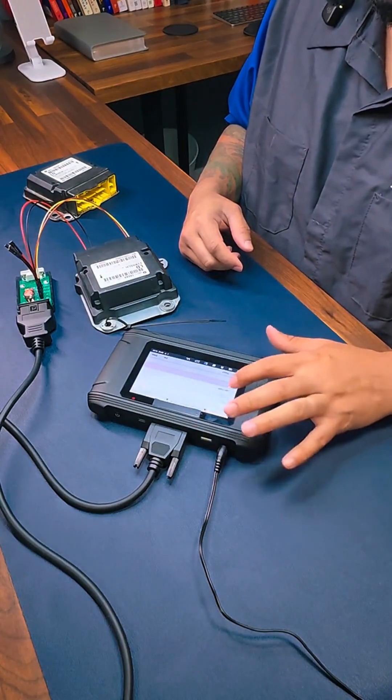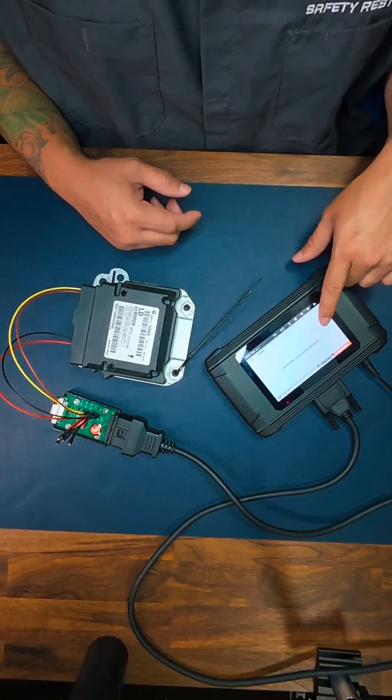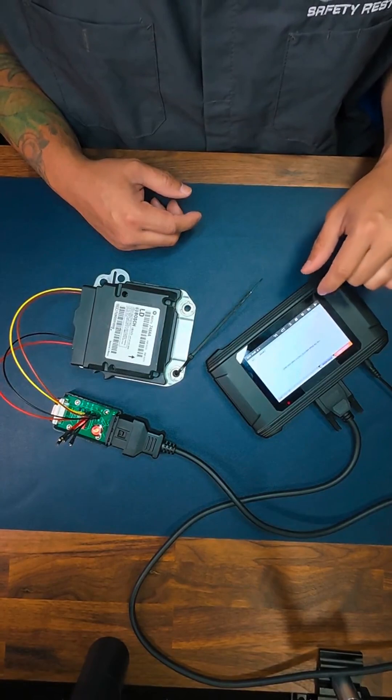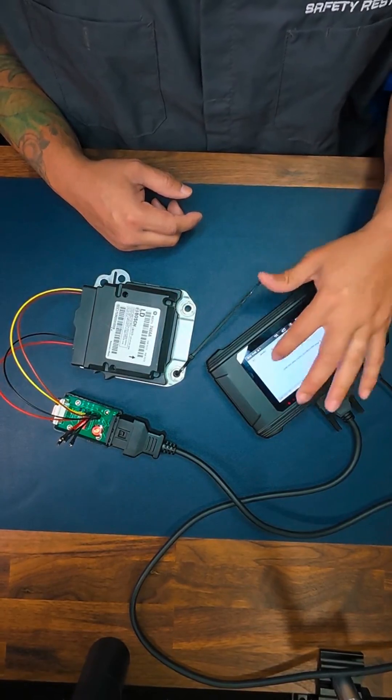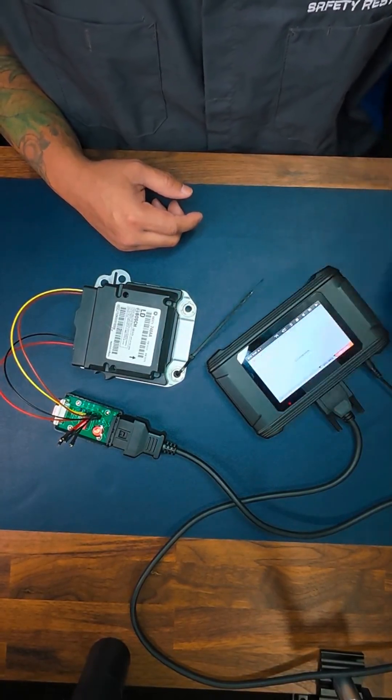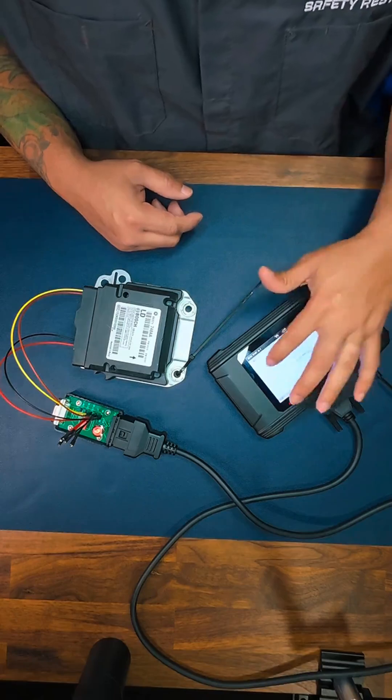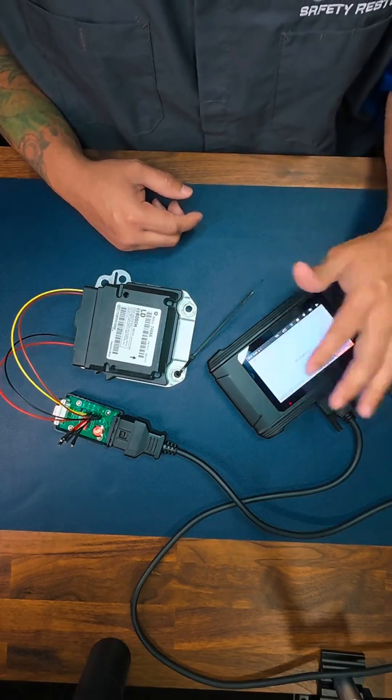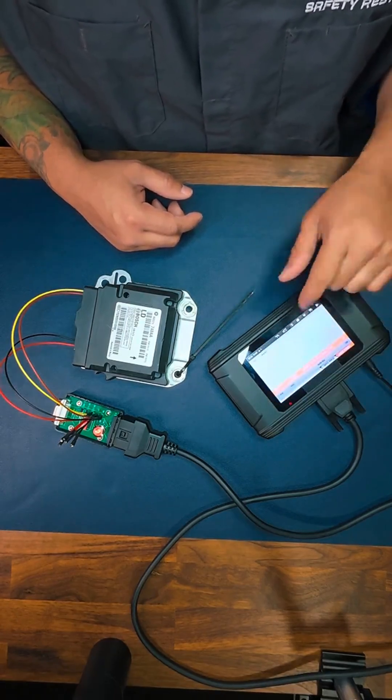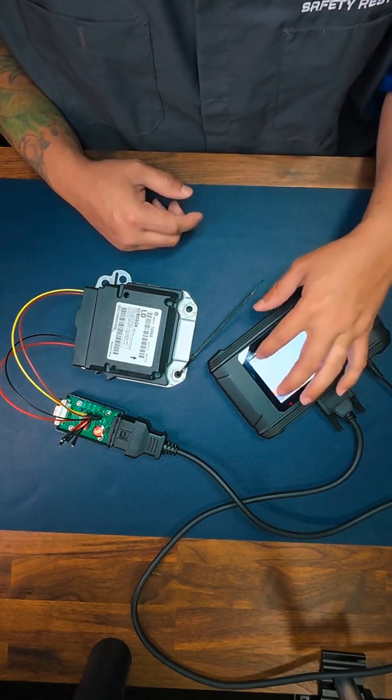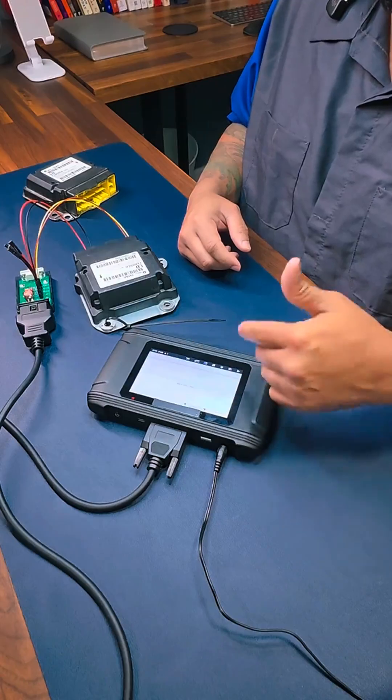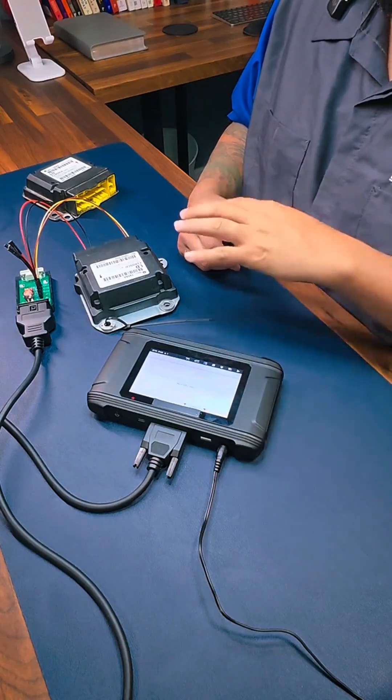And then we have to choose the file, which is the file that we saved earlier. That's the file that we saved earlier. Press OK, and then the system is going to start rewriting and reprogramming the new module with information that we downloaded from the old module.